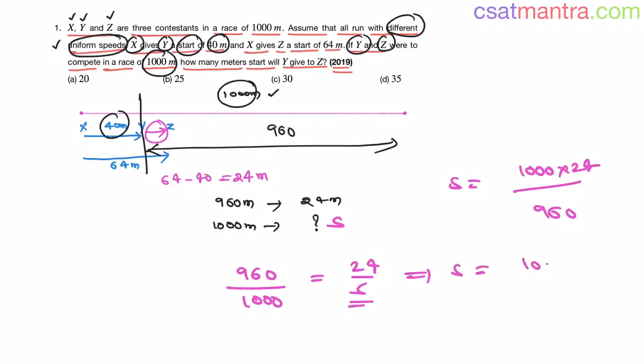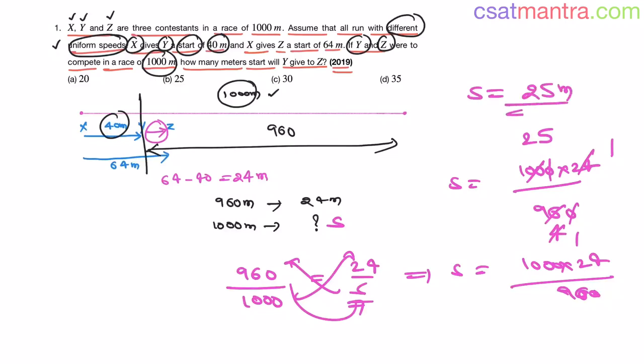S is equal to 1000 into 24 by 960. S goes this side, 1000 goes this side, 960 goes this side as denominator. Now see, 0 0 gets cancelled. 24 divided by 4... 25. So Y should give a start of 25 meters for a 1000 meters race.